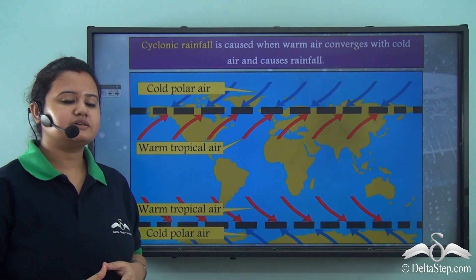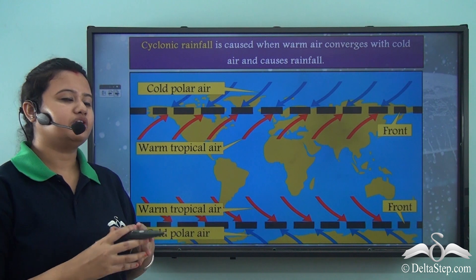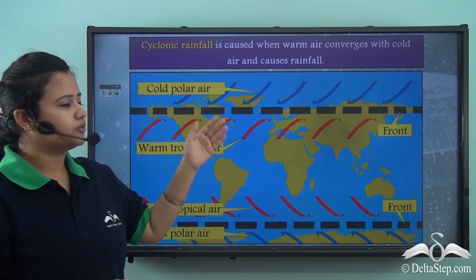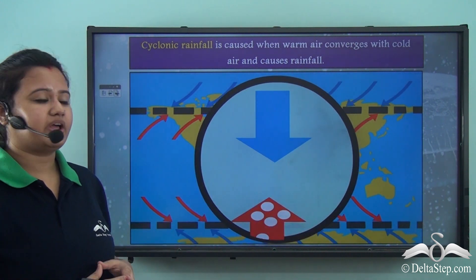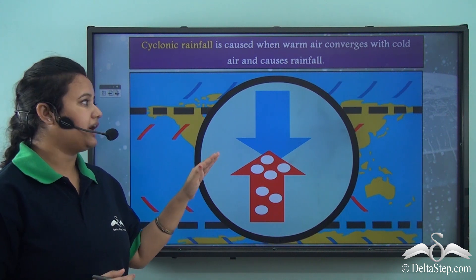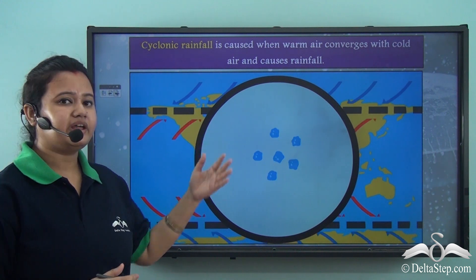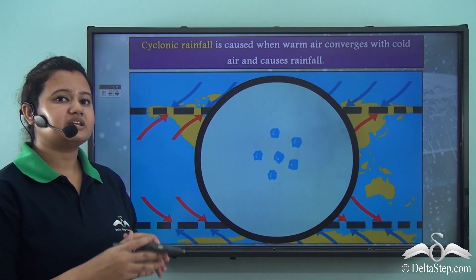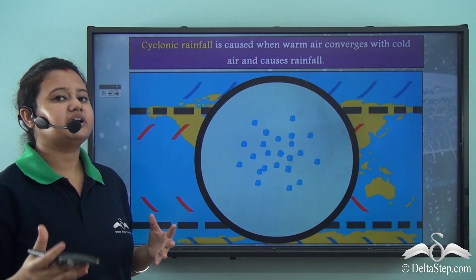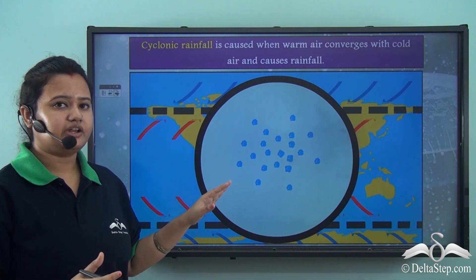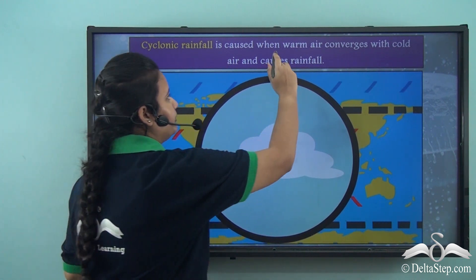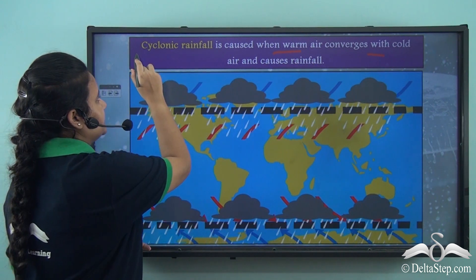The third type of rainfall is caused by the convergence of warm tropical air and cold polar air. This convergence point is known as a front. The warm tropical air, containing moisture, rises over the denser cold air. The moisture condenses and forms clouds, which eventually shed torrential rainfall. Rainfall caused by the convergence of warm and cold air is known as cyclonic rainfall.